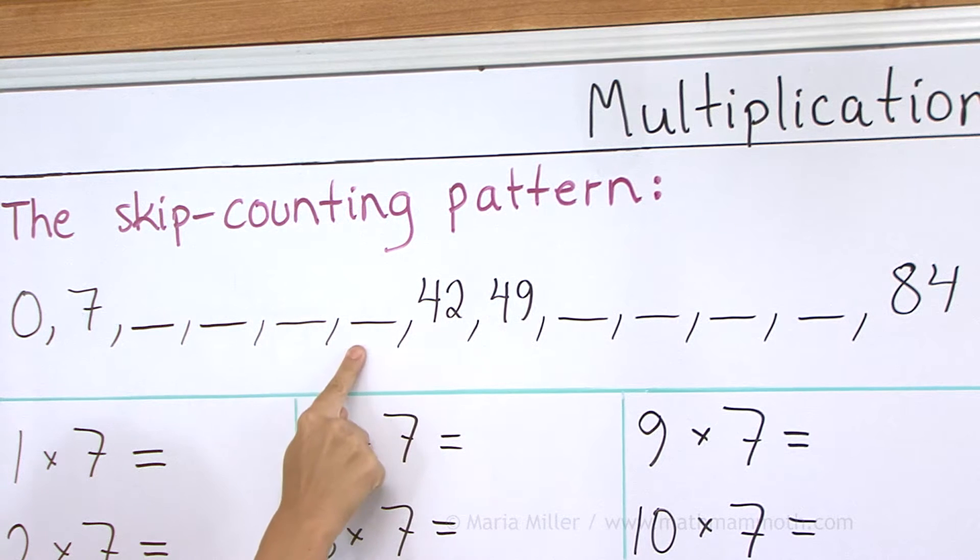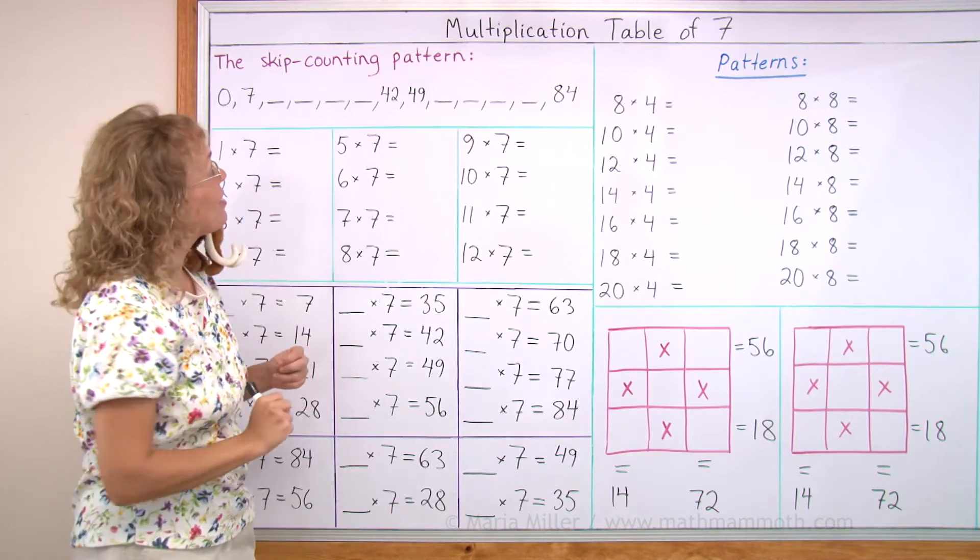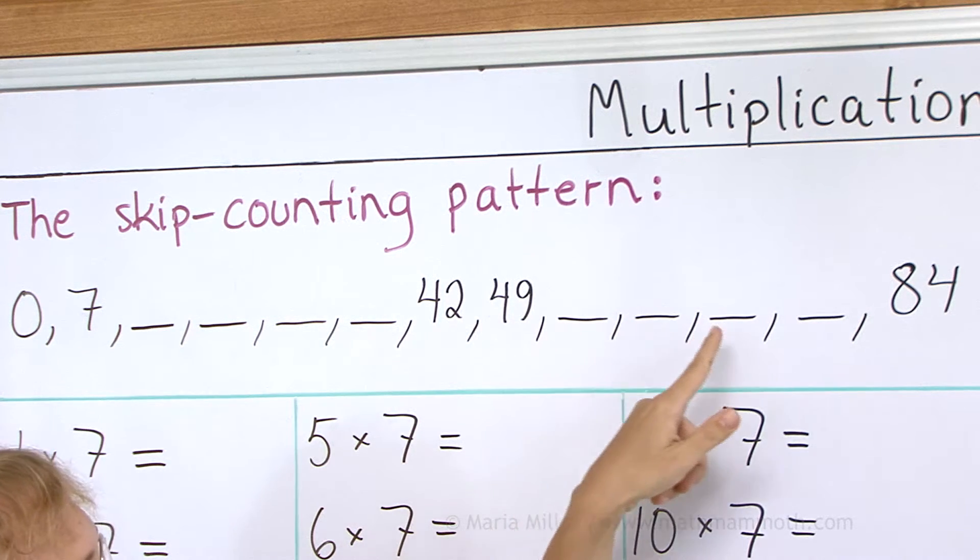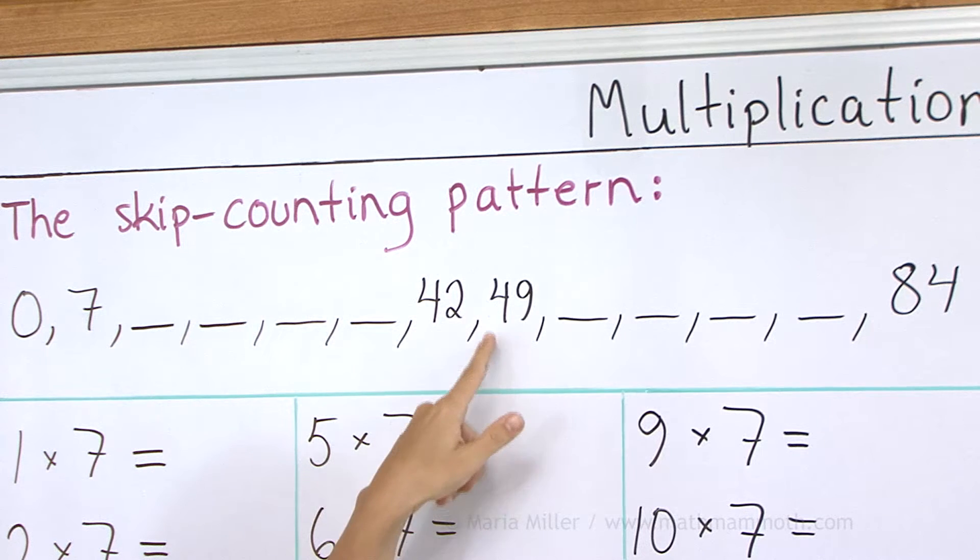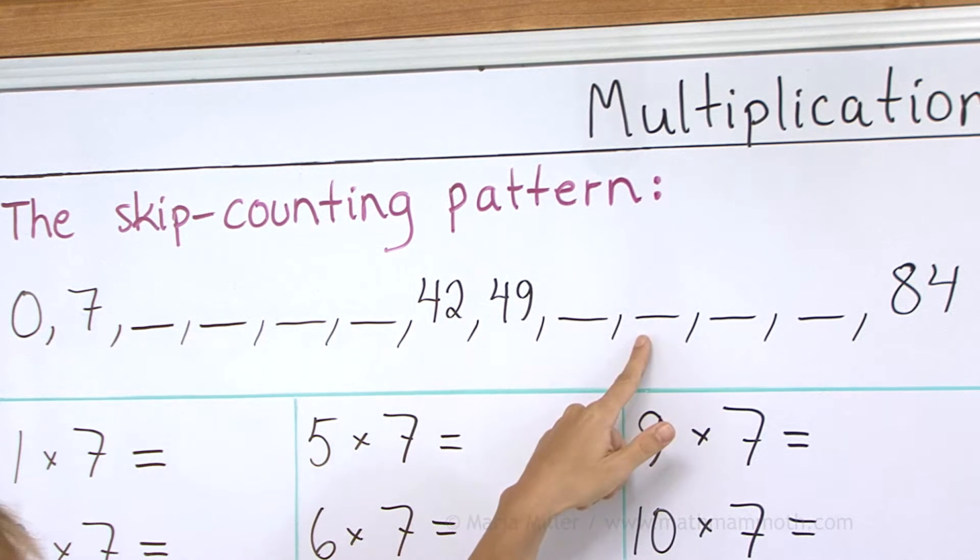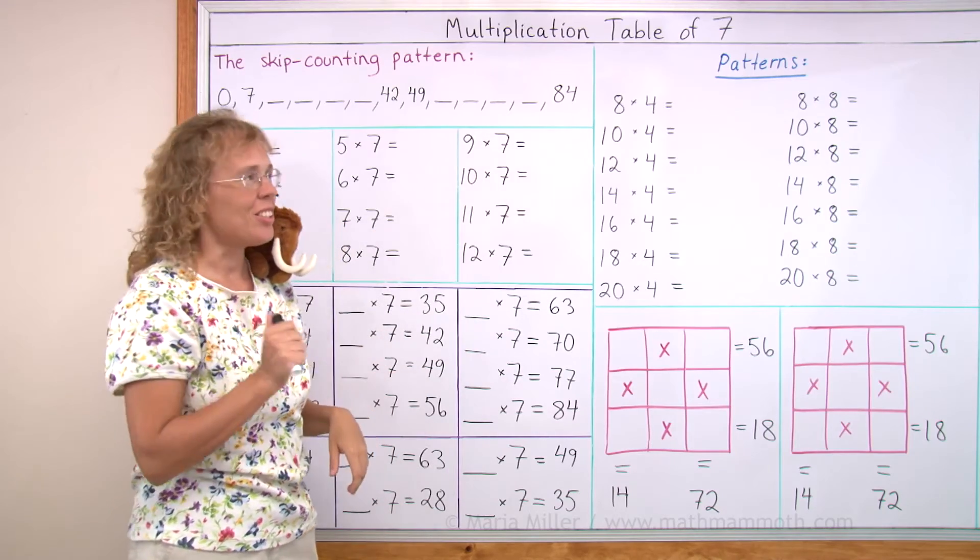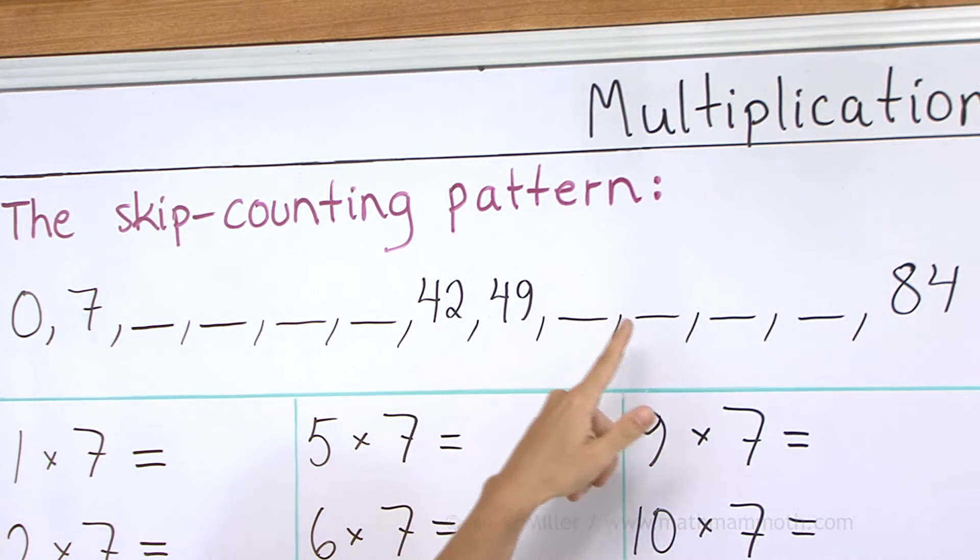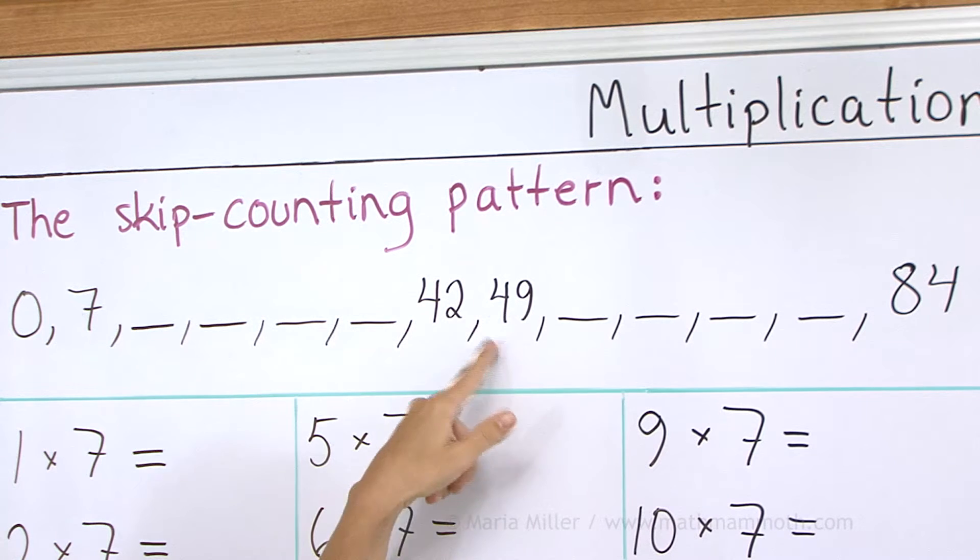And then the latter half from 49, 56, 63, 70, 77, 84. Your turn, you're just adding 7 each time. Try that one more time, 49.